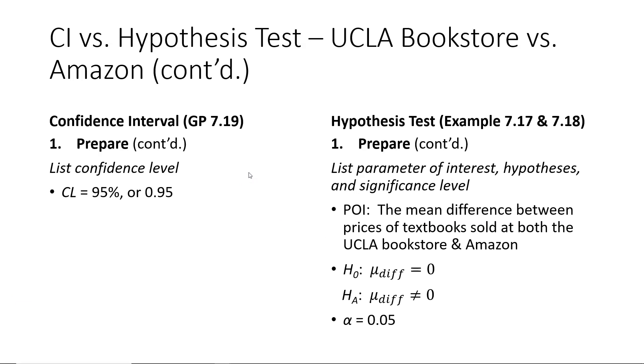Next, we see that there is a difference in the PREPARE step for what was provided in the textbook for the hypothesis test and what you should have put down for the confidence interval. So for what the book presented, we see that it included listing a parameter of interest, hypotheses, and a significance level. Whereas for the confidence interval portion of your written work, you simply had to include the confidence level, which was 95%.